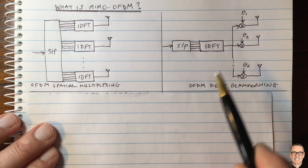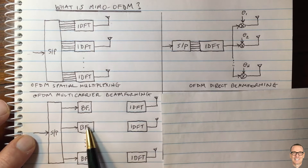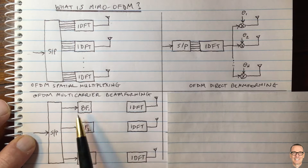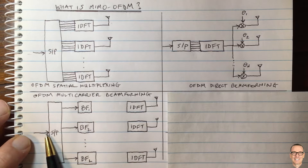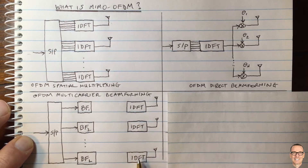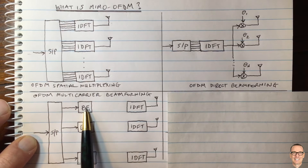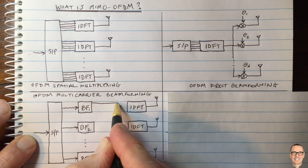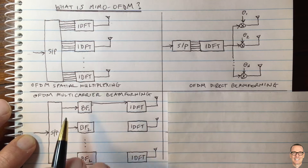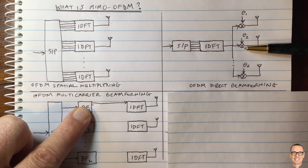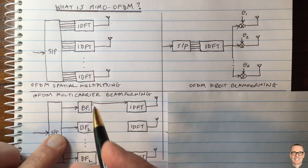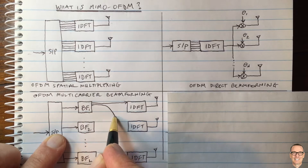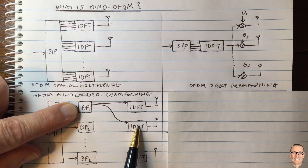So here is what we might look at next: a separate beamformer for each subcarrier, making the beamforming specific to that subcarrier. We now have serial-to-parallel between each subcarrier before going into the OFDM modulators. The first data goes into the first beamformer, which outputs onto the first subcarrier of each antenna. The first beamformer output goes into the first subcarrier of the first antenna, the second output into the second antenna, and so on.